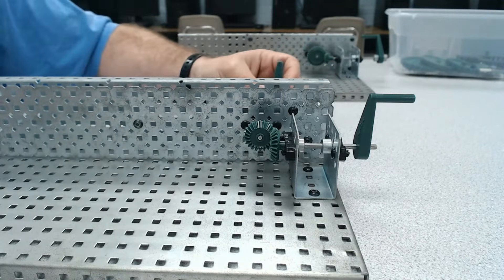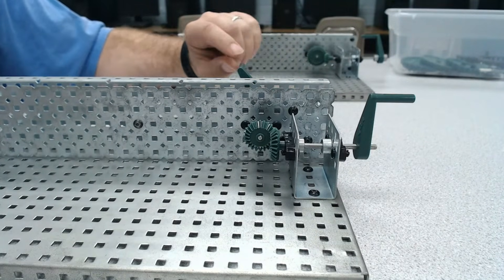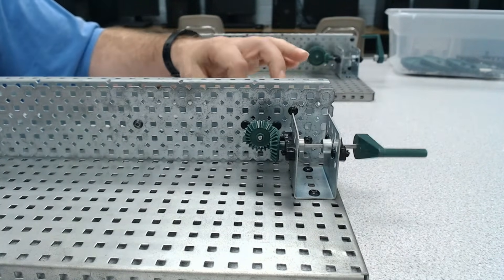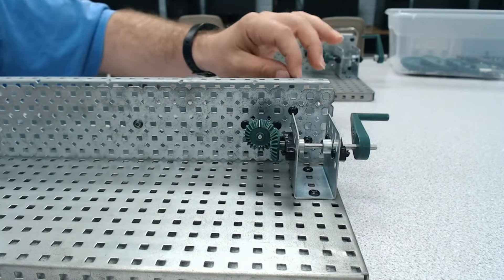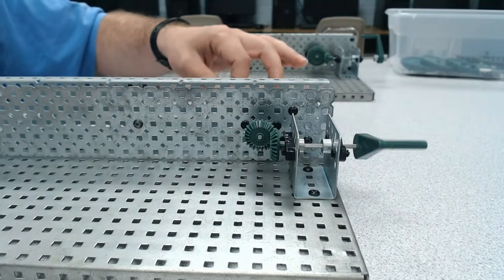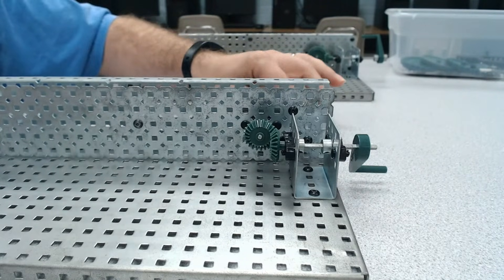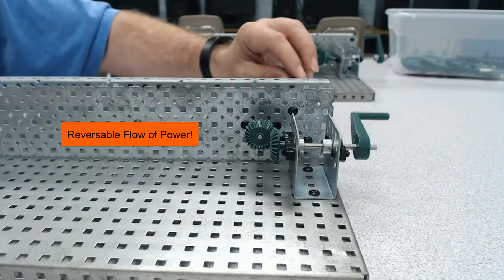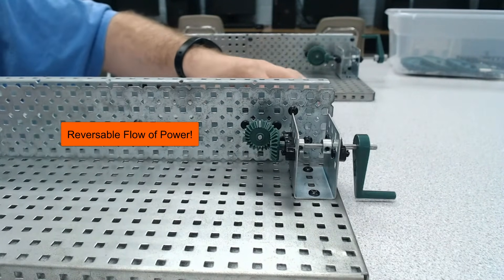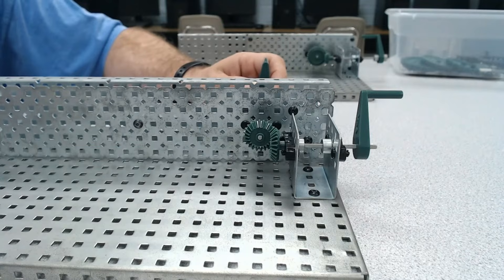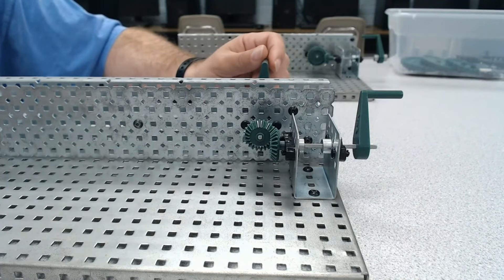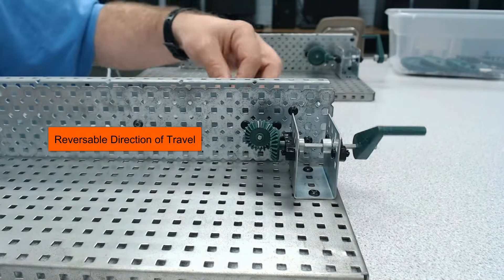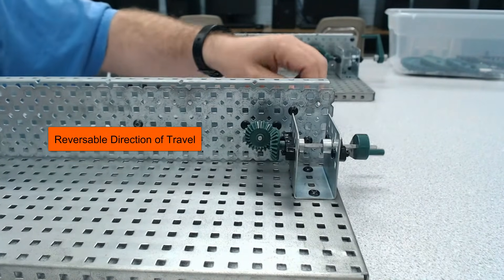Well, let's try attaching the handle. So with that, we see that it does work. If I put the handle on the output, I can make the input turn—well, actually I'm just switching the input-output. So in this one, we have a reversible flow of power. What about direction to travel? Can I do this system in reverse? Yes, I can. So the direction to travel on this one is also reversible.